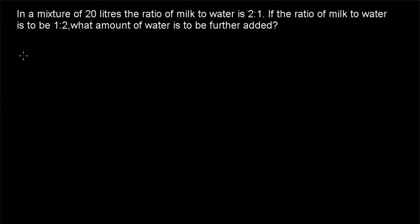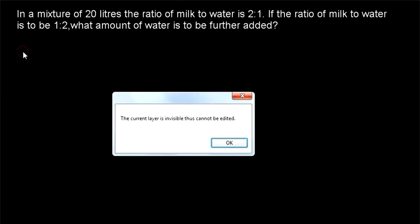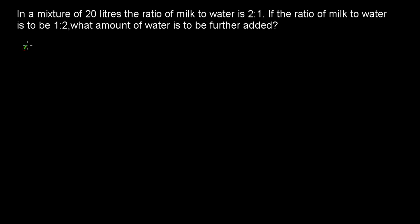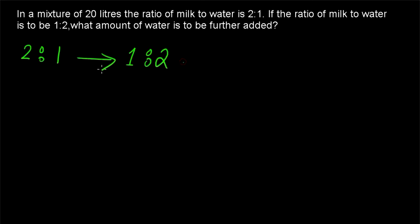Now we want to change this ratio to 1 is to 2. So the ratio of 2 is to 1 is to be converted to the ratio of 1 is to 2. How much water is to be further added?